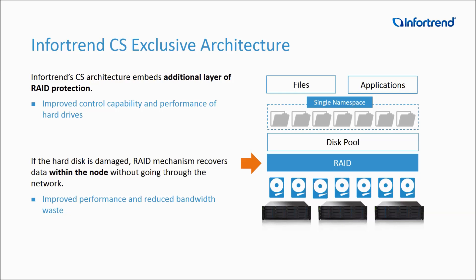Now let's see what exclusive features EonStore's CS architecture provides. Compared to a traditional scale-out NAS architecture, it embeds an additional layer of RAID protection, which is inherited from RAID technology developed exclusively for EonStore DS and GS storage systems, so it can steadily improve the control capacity and performance of EonStore CS hard drives. Under such protection, when the hard disk is damaged, the data can be retrieved and recovered within the node using the RAID mechanism, so there is no need to occupy the bandwidth for data recovery, which means that overall system performance will be improved.